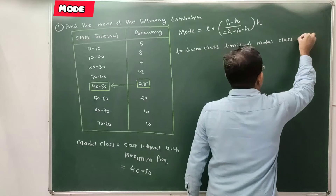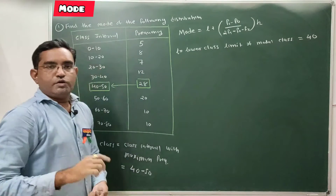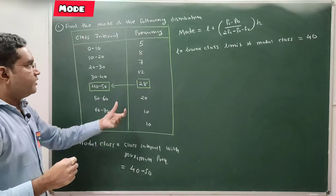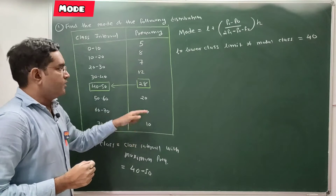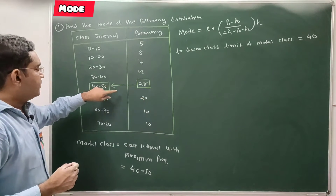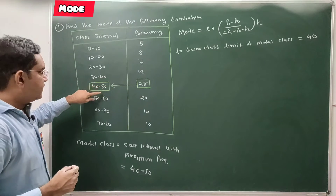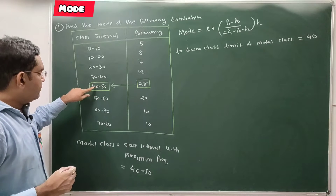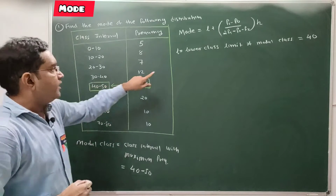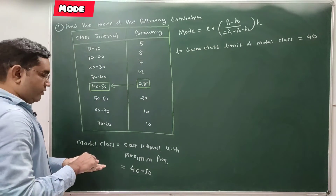The lower class limit of the modal class is l. So l equals 40. You have to find the maximum frequency in the table, identify the modal class, and then take its lower limit as the value of l in the formula.